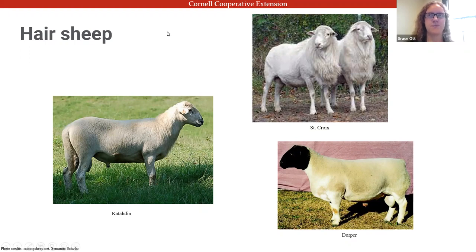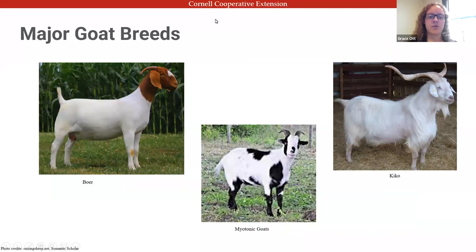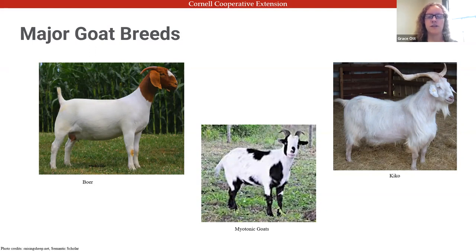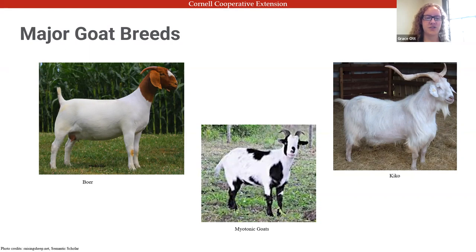For meat goats, the most common breed in the U.S. is probably Boer goats, known for really good muscling and high-quality meat. We also have Kiko goats and Myotonic goats — commonly known as fainting goats — which have a physiological trait where if they're spooked they instantly freeze up and fall over as if fainting.